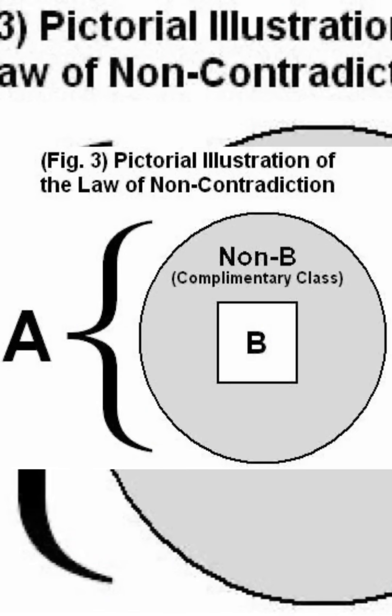Second, the law of non-contradiction. It says something cannot be both true and false at the same time in the same way. For example, a light switch cannot be both on and off at the same time.